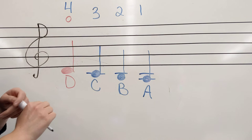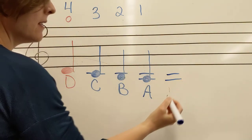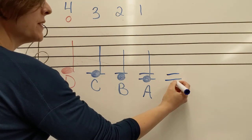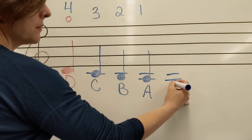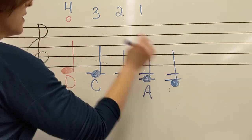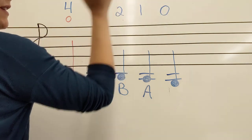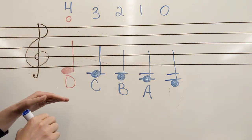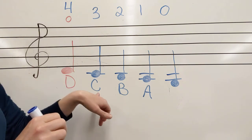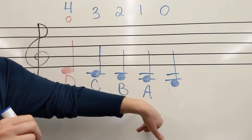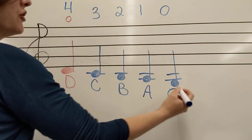And we have one more note. We have to draw those same two ledger lines again. And then now our note will sit below them. Four, three, two, one, zero. For our fingers. Now here's where our alphabet thing kind of breaks down a little bit, right? D, C, B, A. And remember after A, we're going to cycle back to G.